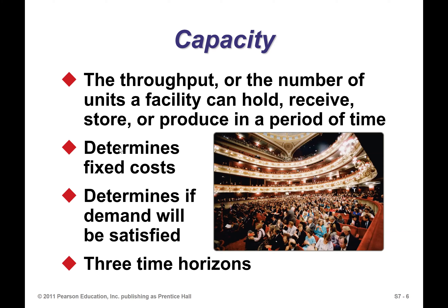Capacity will help you determine your fixed costs, and it determines if your demand will be satisfied. For example, if you have a demand of 10,000 widgets but your capacity is only 8,000 — your machine can only do 8,000 widgets — you cannot satisfy your demand because your demand is 2,000 more than your capacity. So it determines if demand will be satisfied or not.